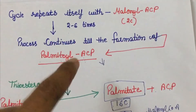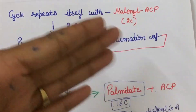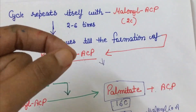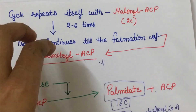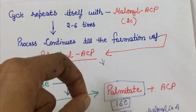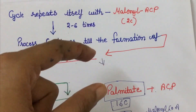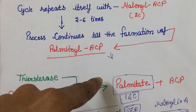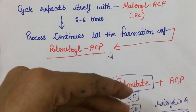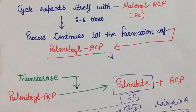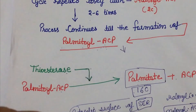In prokaryotes, separate enzymes catalyze each individual reaction of fatty acid biosynthesis. In eukaryotes, we have fatty acid synthase, which is a single multifunctional enzyme complex — making it much more efficient than prokaryotes. This is the key difference between fatty acid synthesis in prokaryotes and eukaryotes. In the next video, I will talk about the formation of double bonds and the regulation of fatty acid biosynthesis.